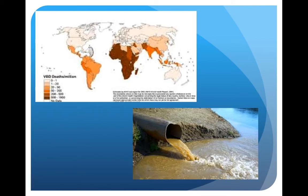The map above shows the countries at highest risk of waterborne illnesses. As you can see, many countries in Africa are at higher risk, while America looks pretty safe. The darker the color, the bigger the risk. The picture below shows possible fecal matter going through a tube into the water, so if someone were to drink that, they'd be at risk for all sorts of waterborne illnesses.